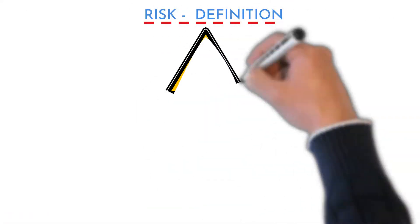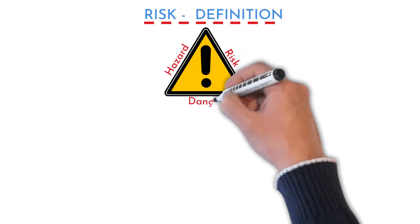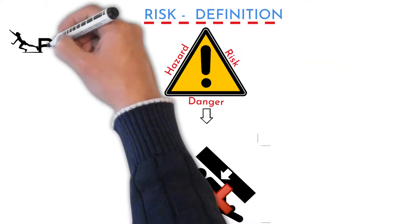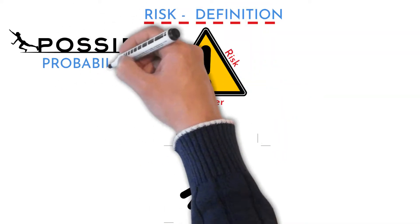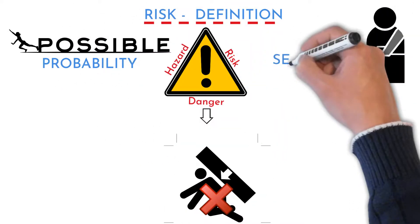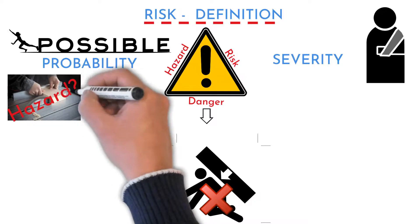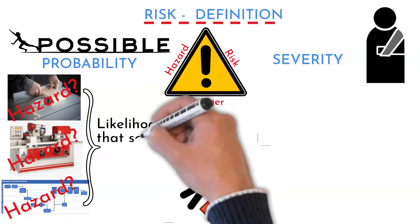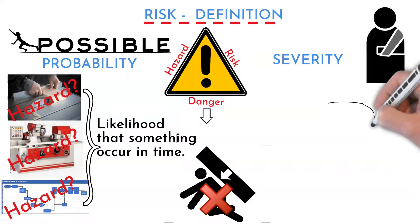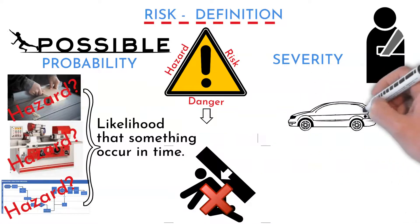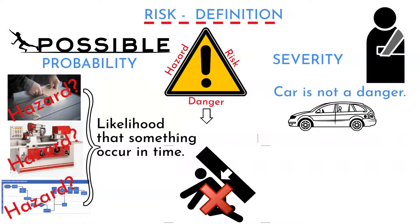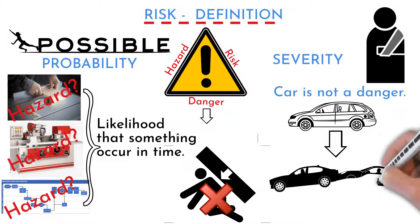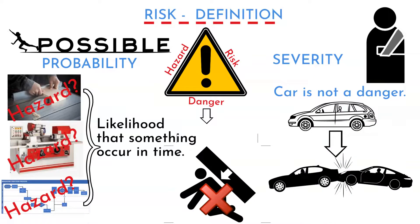We must define risk first. Hazard or risk does not mean danger that some incident happens. It is a combination of incident probability and severity of incident consequences. Hazard thus is not a workspace, machine, or process itself, but the likelihood that something wrong occurs in some period of time. For example, when we drive a car, the danger is not the car itself, but the possibility that we fail to notice other cars while entering the main road.